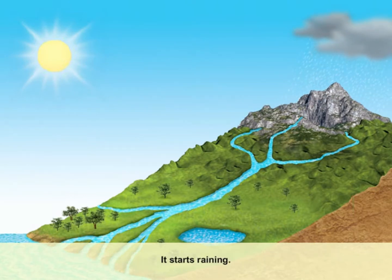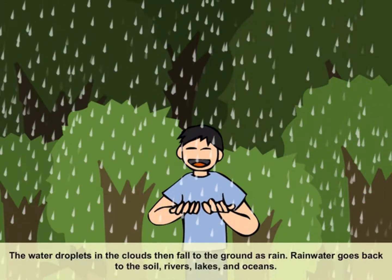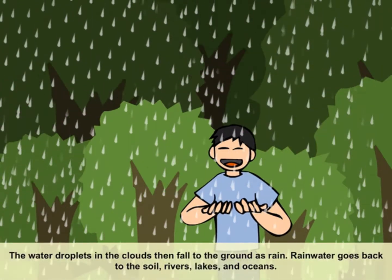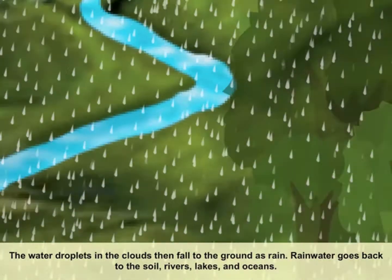It starts raining. The water droplets in the clouds then fall to the ground as rain.